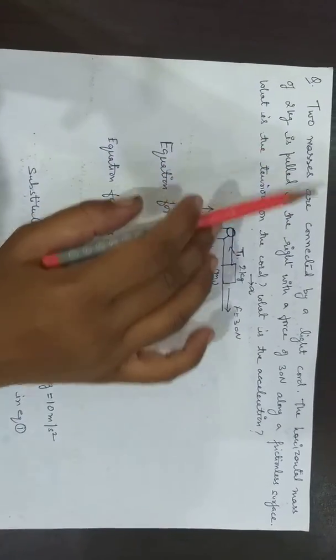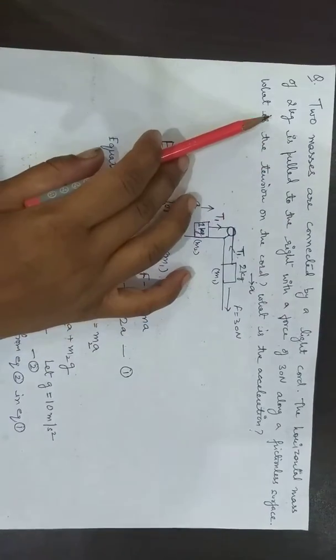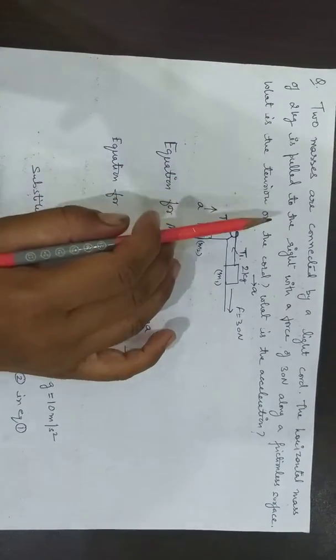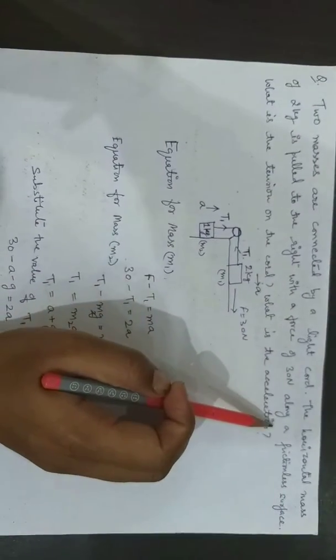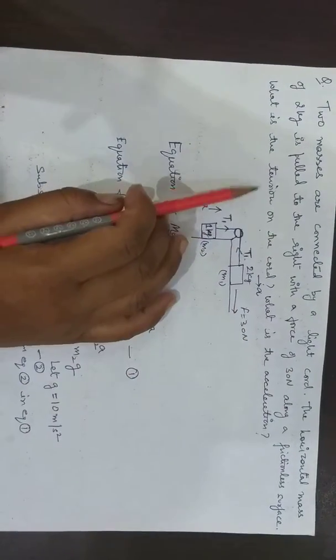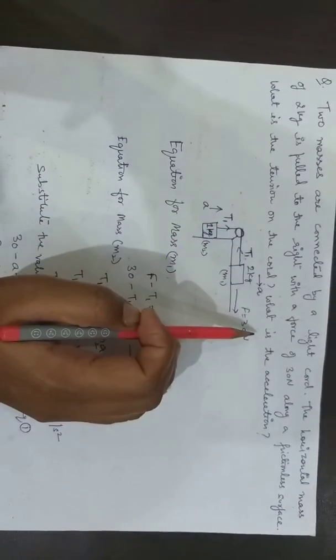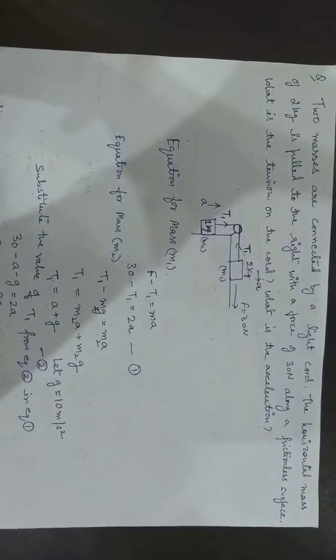Two masses are connected by a light cord. The horizontal mass is 2 kg and it is pulled to the right with a force of 30 N along a frictionless surface.